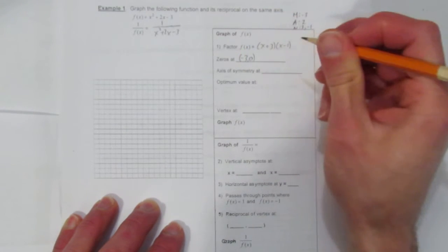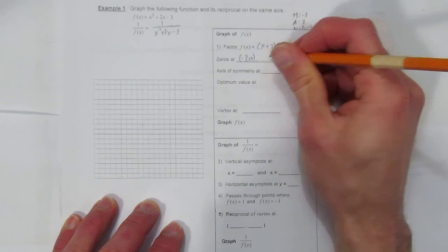And we factored it down to (x + 3) and (x - 1). Which means there are zeros at (-3, 0) and (1, 0).